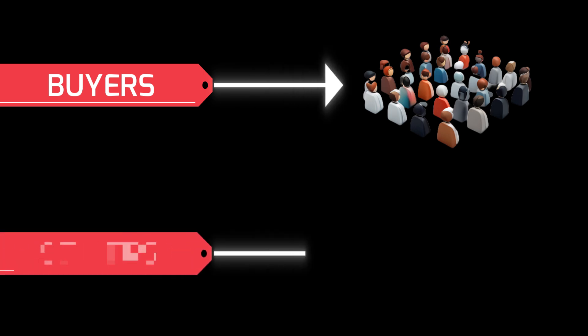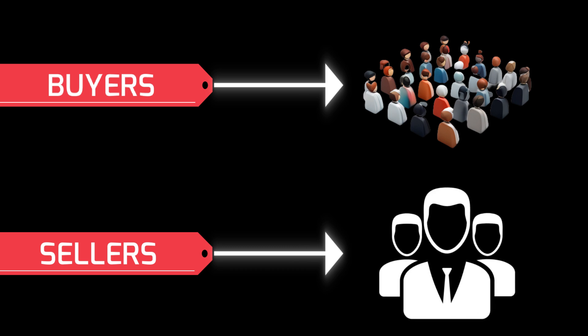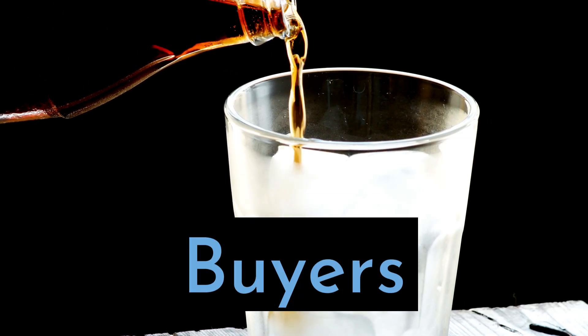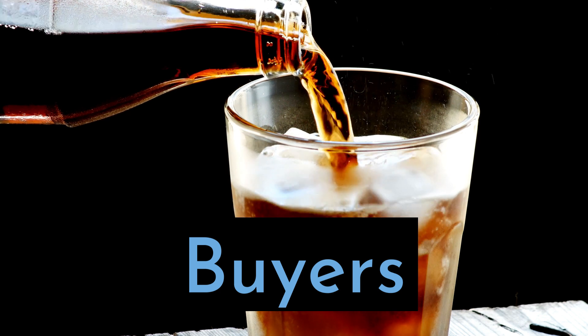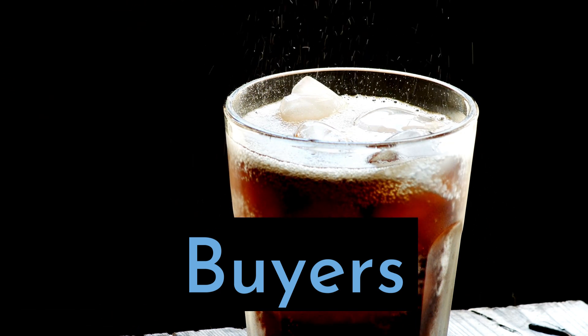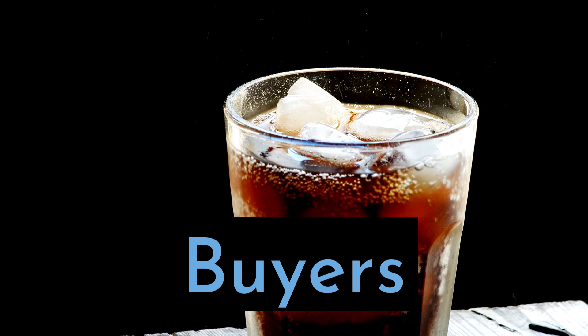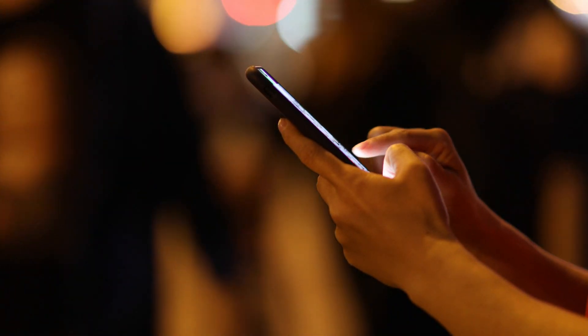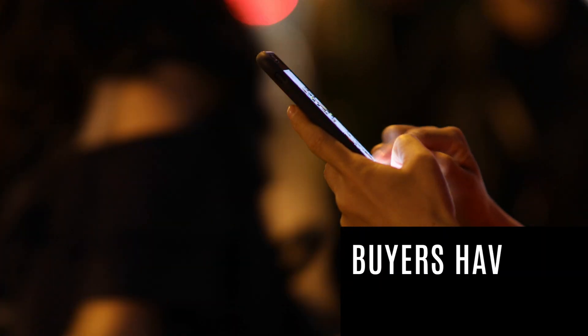We're going to go into oligopoly. An oligopoly is an economic market structure where buyers only have three to five companies they can buy particular products and services from. There are not many options like in perfect competition or monopolistic competition. Buyers in this situation are going to be price takers. For example, if a buyer wants a soft drink, more than likely it's going to be a Coca-Cola or Pepsi product. If you have a cell phone, more than likely it's going to be Verizon, AT&T, or T-Mobile — that's another example of an oligopoly.